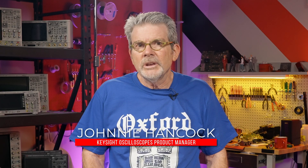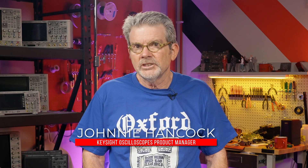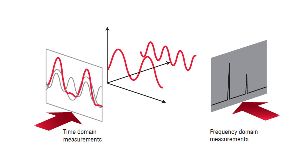I'm Johnny Hancock, Product Manager for Keysight Technologies InfiniVision Oscilloscopes. As you can see in this three-dimensional graph on your screen, there are different ways of looking at a signal. The graph on the right shows a frequency domain representation of a signal that consists of two sine waves at different frequencies and different amplitudes. Amplitude is on the vertical axis, frequency is on the horizontal axis. The graph in the middle shows the two individual sine waves in a time domain format, and the graph on the left shows the summation of these two sine waves to produce the final time domain waveform, which is what we would typically view on an oscilloscope.